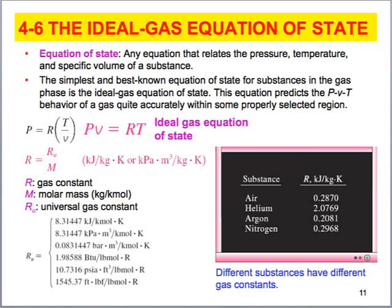The ideal gas equation says that pressure times specific volume is equal to the ideal gas constant times absolute temperature. The ideal gas constant can be calculated by using the universal gas constant — 8.314 kilojoules per kilomole per degree K — divided by the molecular weight of the substance. So for nitrogen (N2), we would take 8.314 divided by 28 to get the ideal gas constant for that particular gas.